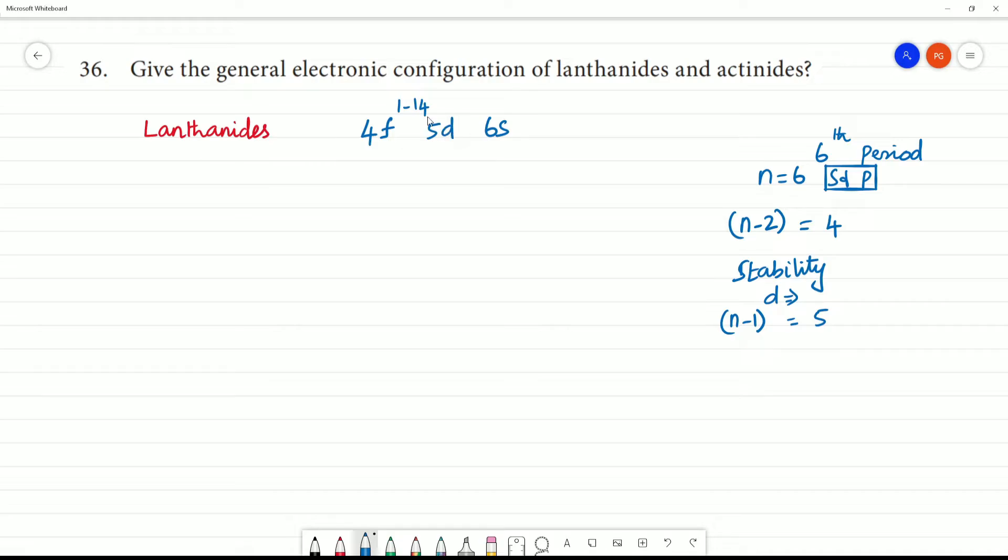D orbital will be penultimate shell. So if we have an array of 0, it will be 0 but 1. This is because of stability. Clear. This is the electronic configuration of lanthanides.